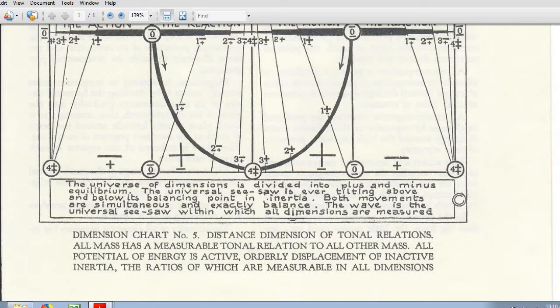I think it's good to reread his comments only on these charts because people have their own opinions of what that really means. And so if I try to read other comments on these pictures that exist in other material, I find that it just confuses me more. So this dimension chart number five, distance of dimension of tonal relations. All mass has a measurable tonal relation to all other mass. All potential of energy is active, quarterly displacement, inactive inertia. The ratios of which are measurable in all dimensions.